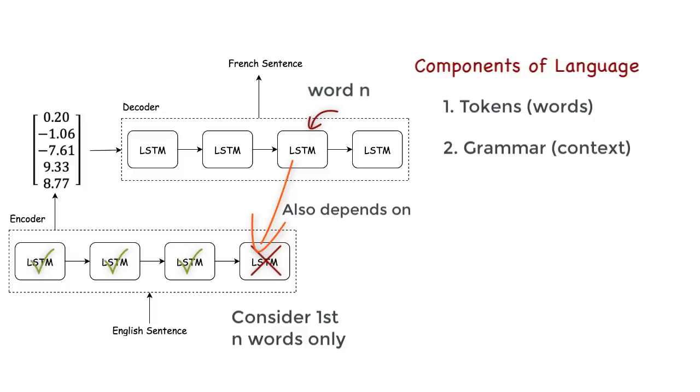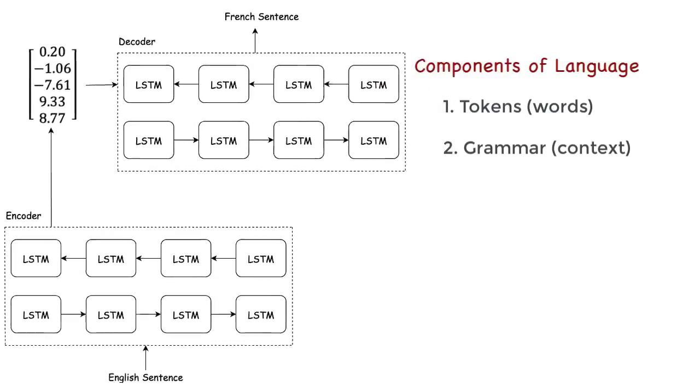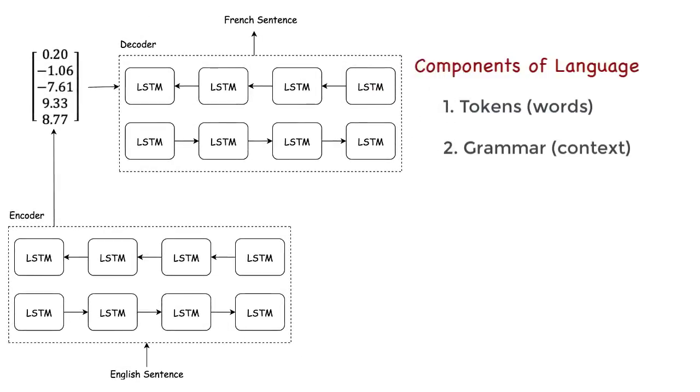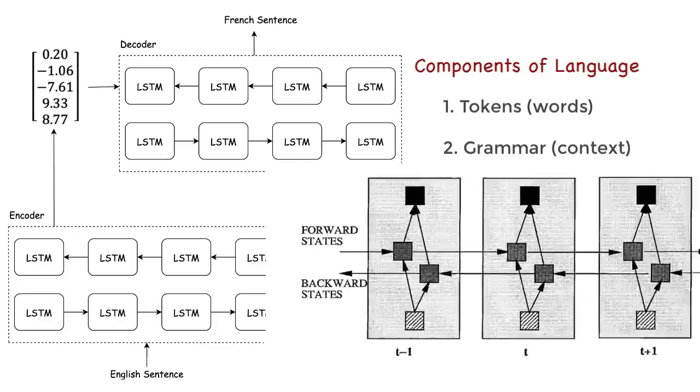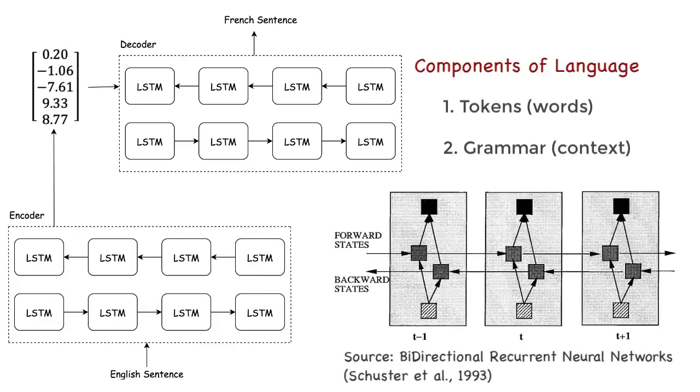So in order to look in both directions, forward and backward, we replace the normal recurrent neural network with a bidirectional recurrent neural network. Interestingly, these bi-RNNs were introduced way back in 1993, but gained popularity recently with the emergence of deep learning.